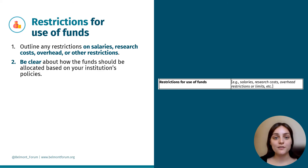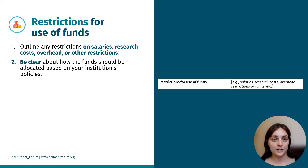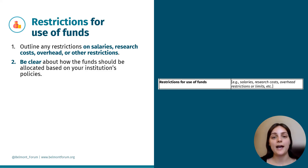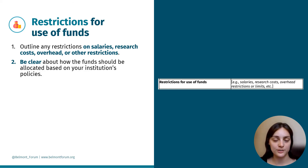In box seven, outline restrictions for use of funds. This can include limitations on salaries, research costs, overhead, or any other restrictions. Be clear about how the funds should be allocated based on your institution's policies.